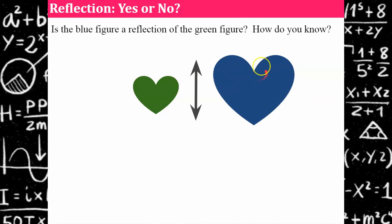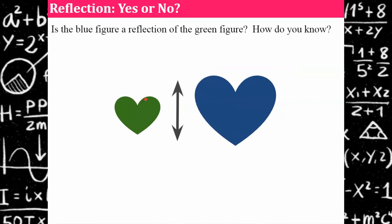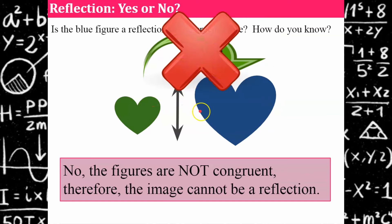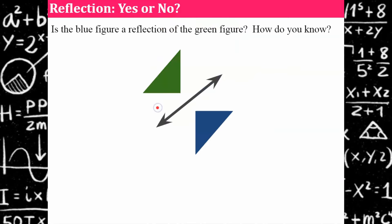Your turn again: Is the blue figure a reflection of the green figure? The answer is no, because these figures are not congruent. We can't even consider whether it's a reflection, because with a reflection the images must be the same size and shape.